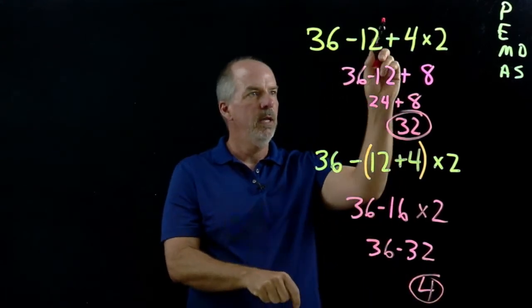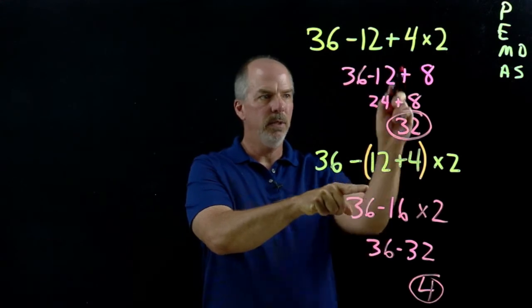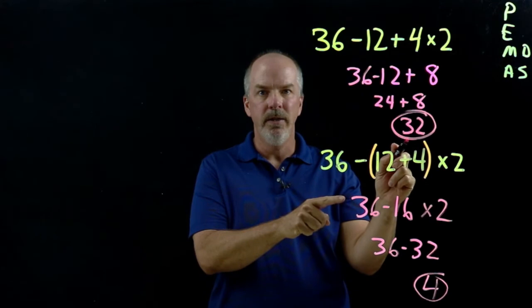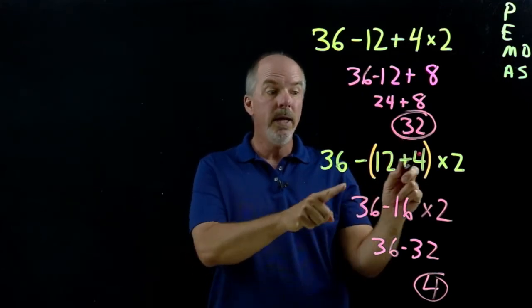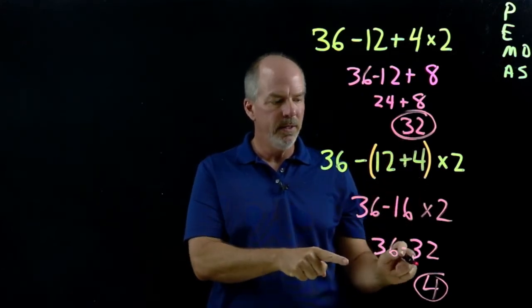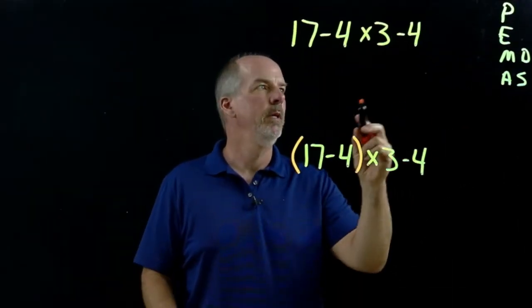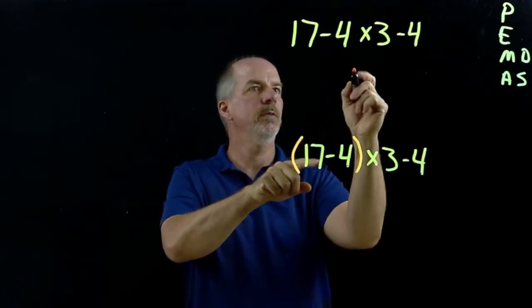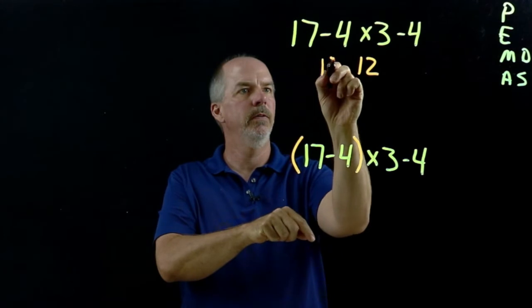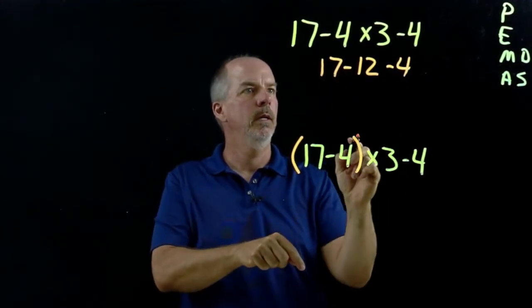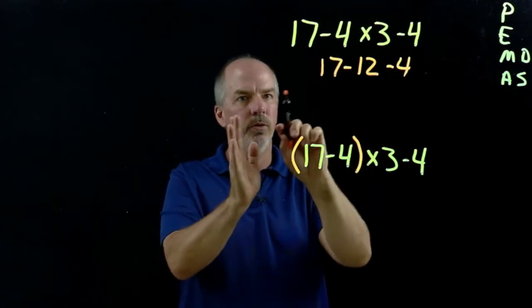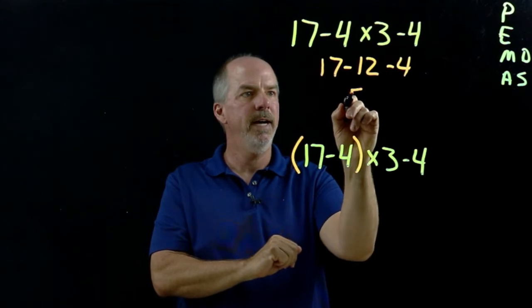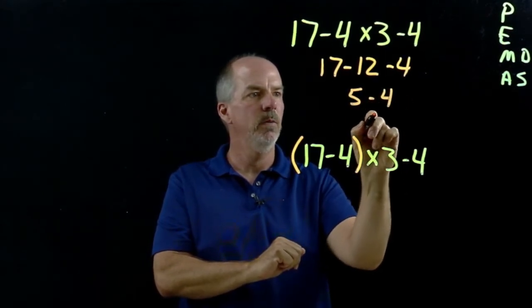You can see the location of the parentheses completely changes our answers. Without parentheses we got 32; with parentheses we got 4. Let's look at this problem — orders of operations. No parentheses, no exponents, but we do have multiplication so we'll do that first. Bring everything else down. Now we have subtraction — left to right. So 17 minus 12 is 5, and 5 minus 4 is 1.